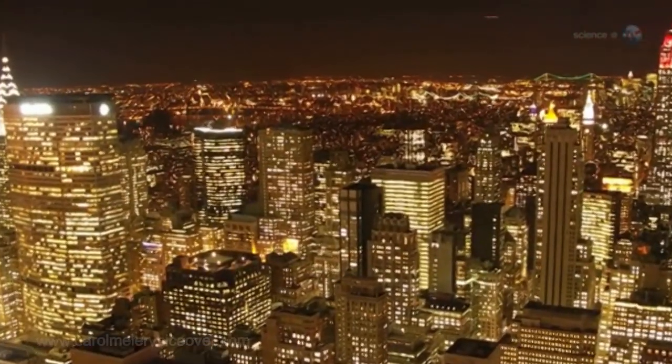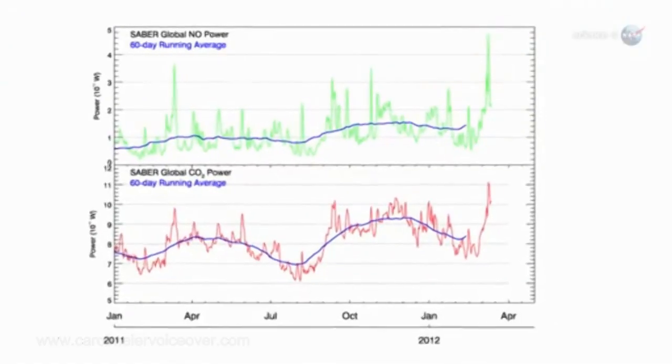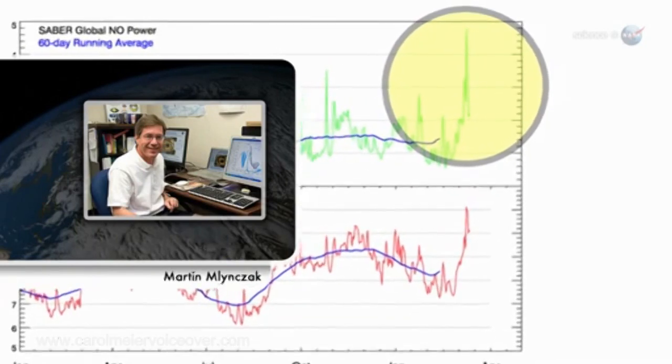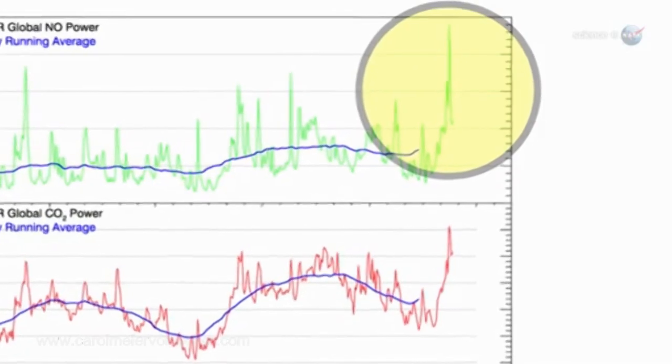This was the biggest dose of heat we received from a solar storm since 2005, says Martin Malinchak of NASA's Langley Research Center. It was a big event and shows how solar activity can directly affect our planet.